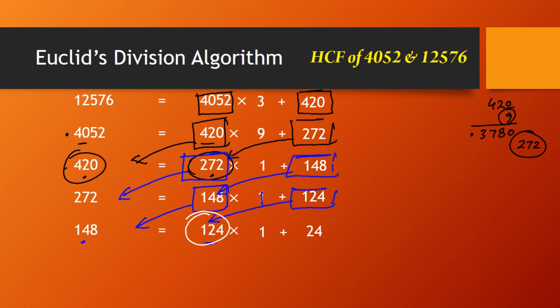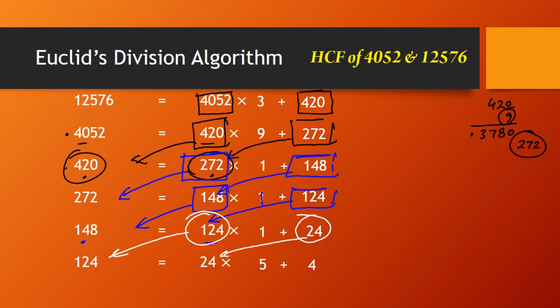Next step, following the same procedure: 124 becomes the dividend and 24 becomes the divisor. We get 124 = 24 × 5 + 4, since 24 × 5 = 120. So the quotient is 5 and the remainder is 4. Now 24 becomes the dividend and 4 is the divisor: 24 = 4 × 6 + 0. The remainder is 0. Since the remainder is 0, the last divisor is the HCF. Therefore, HCF is 4.